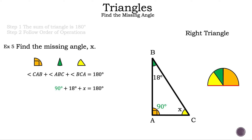Let's simplify the left-hand side by adding 90 degrees and 18 degrees, and the result is 108 degrees. Now we have 108 degrees plus X is equal to 180 degrees. Since we are solving for X, we need to move that positive 108 degrees to the other side. The inverse of plus is subtraction, so we subtract 108 degrees on the left-hand side. Those two numbers cancel, and since we did it to the left-hand side, we now need to do it to the right-hand side: 180 degrees minus 108 degrees, and the result is 72 degrees. So X, our missing angle, is 72 degrees. That is example five.